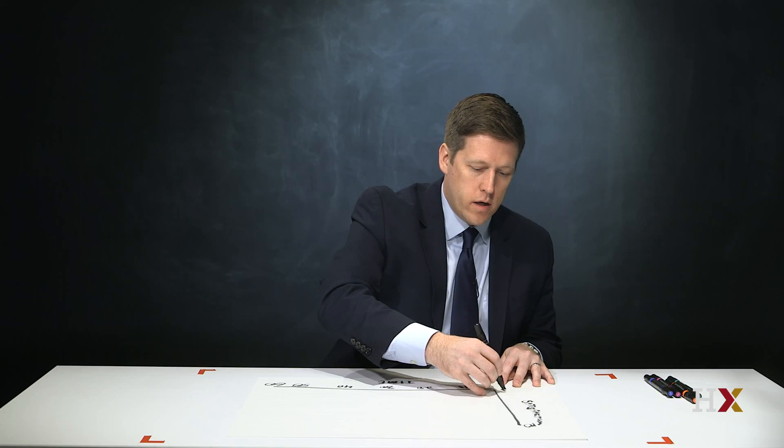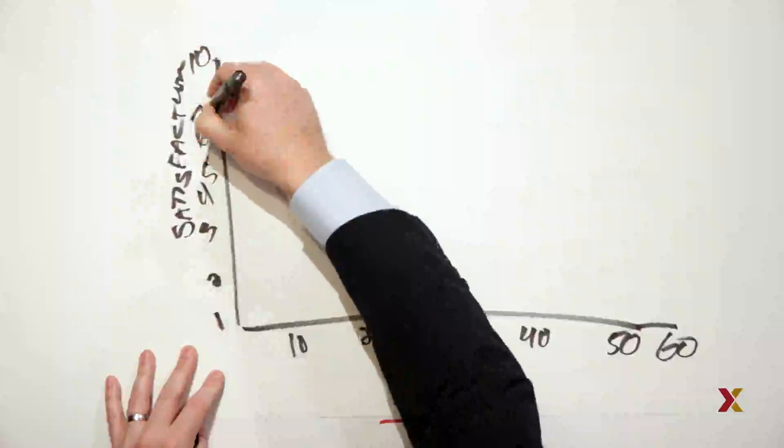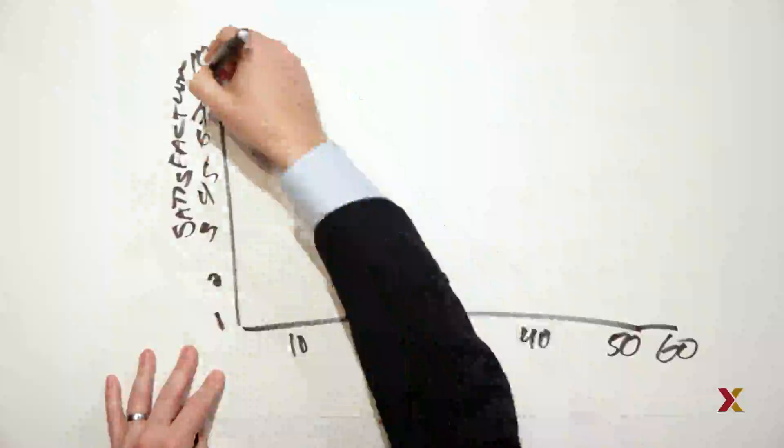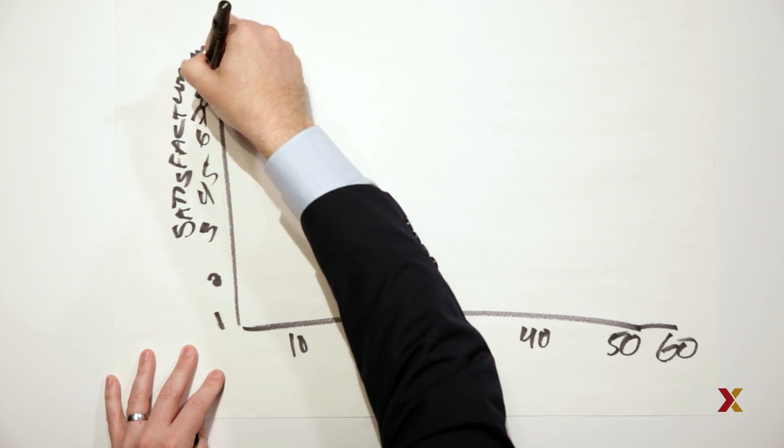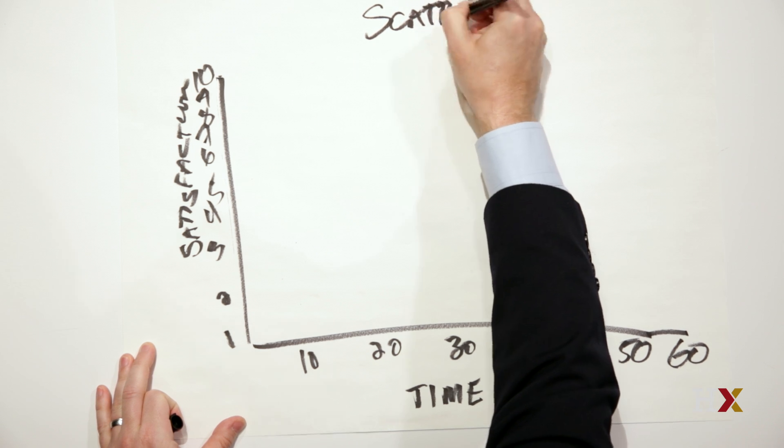So we're doing 1 through 10. All right? So this is our scatterplot.